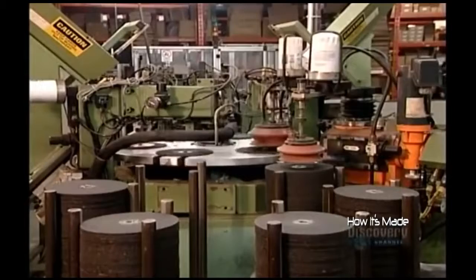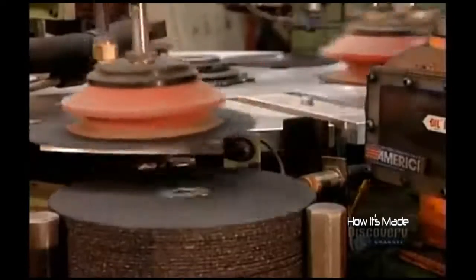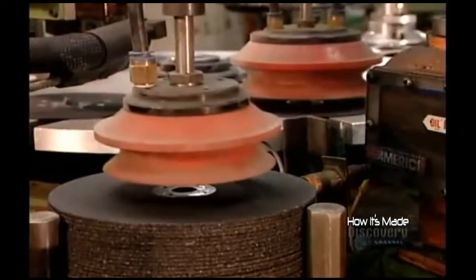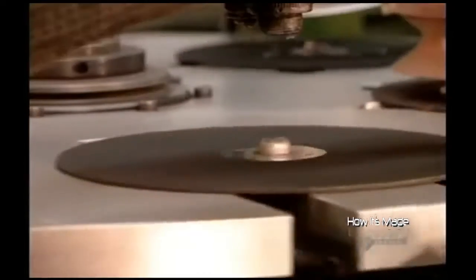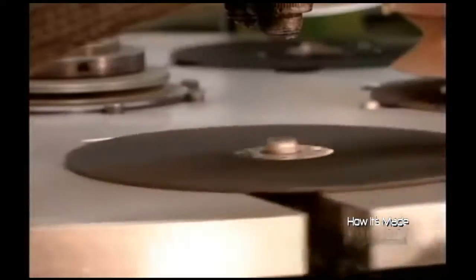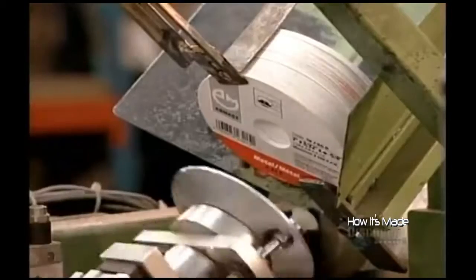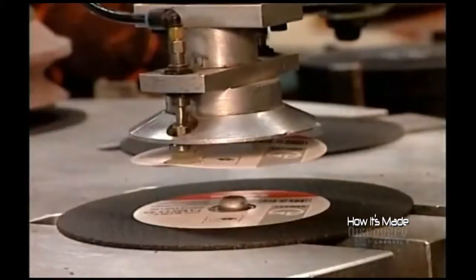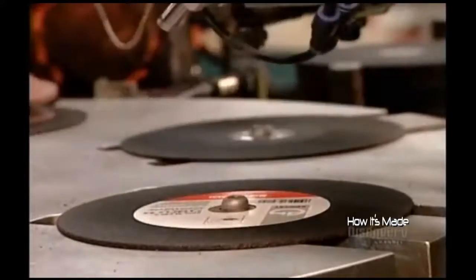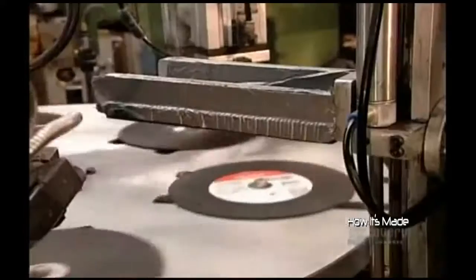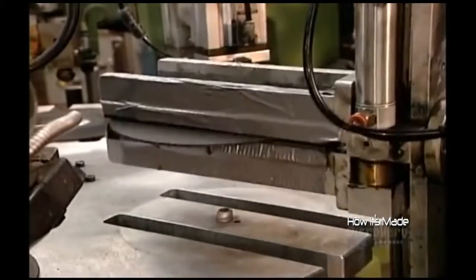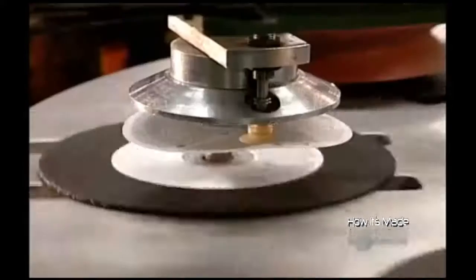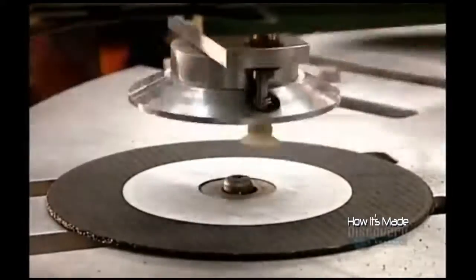The last step of the production process is labeling. The automated machinery moves the wheels from station to station using suction. It applies eight drops of hot glue around the center, then slaps on the first label. The label bears the manufacturer's logo and lists the grinding wheel's dimensions, its intended use, and the maximum spin speed. The equipment then flips each wheel and glues a second label onto the other side. This label lists the safety information.